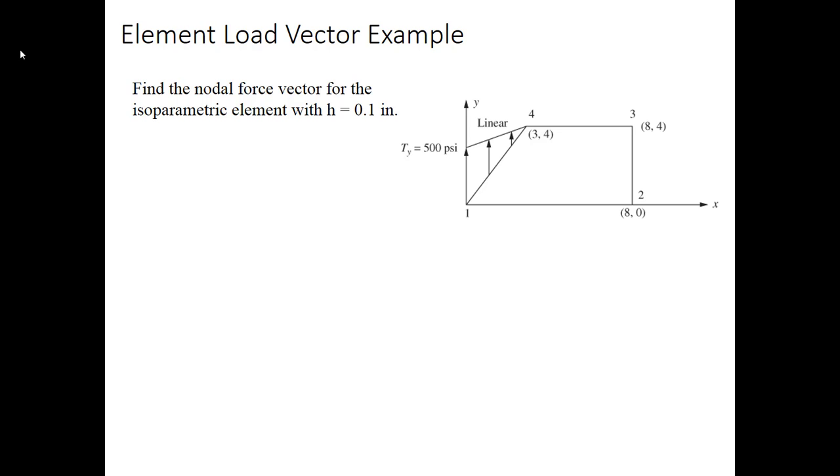Let's find the nodal force vector for the isoparametric element shown here with the load applied on its left edge. The left edge, by definition, is the 1, 4 edge. This is the edge that is going to correspond to s equal to negative 1. We're also given that the peak value of this traction is 500 pounds per square inch, and the thickness of the element is 0.1 inch.